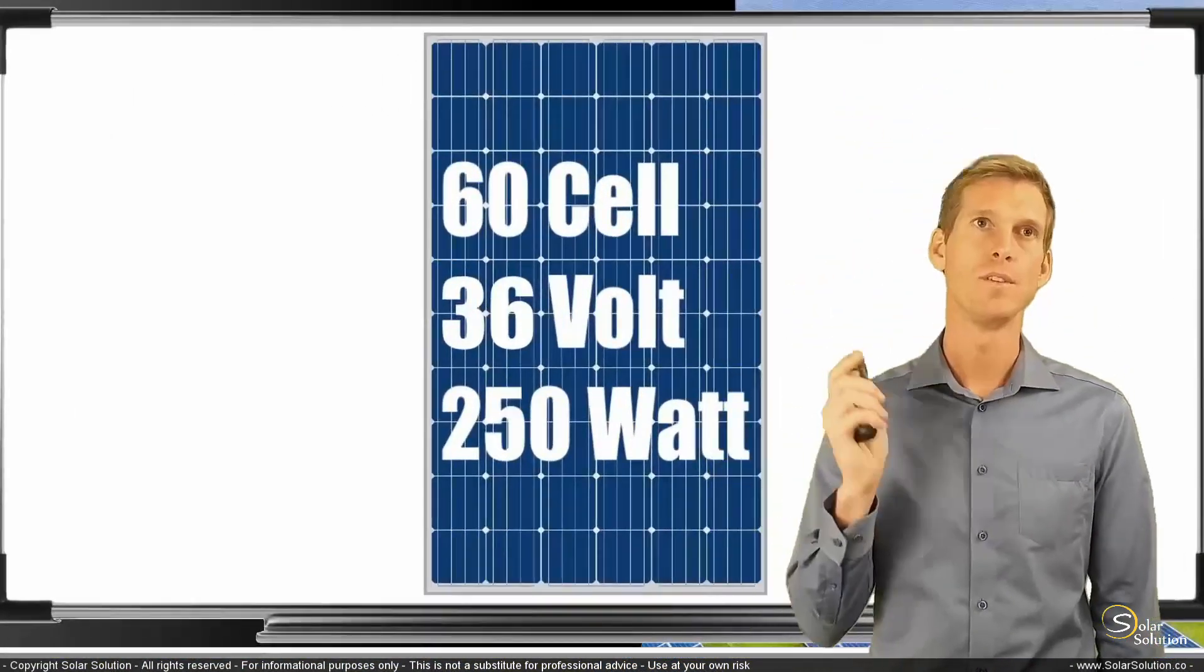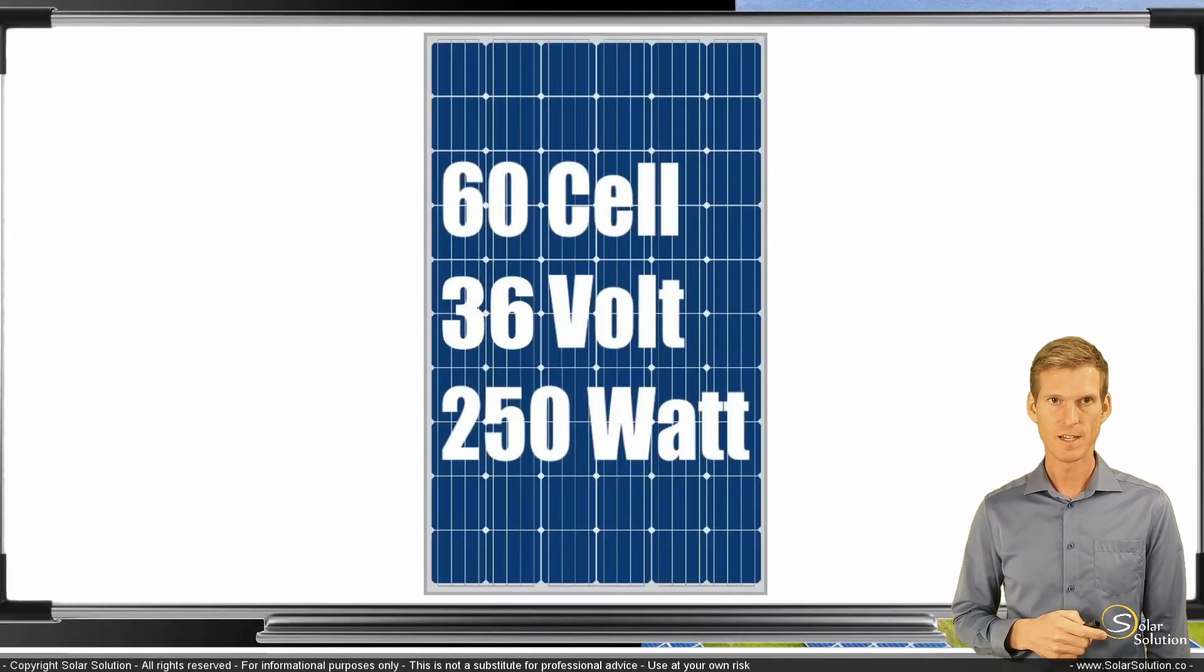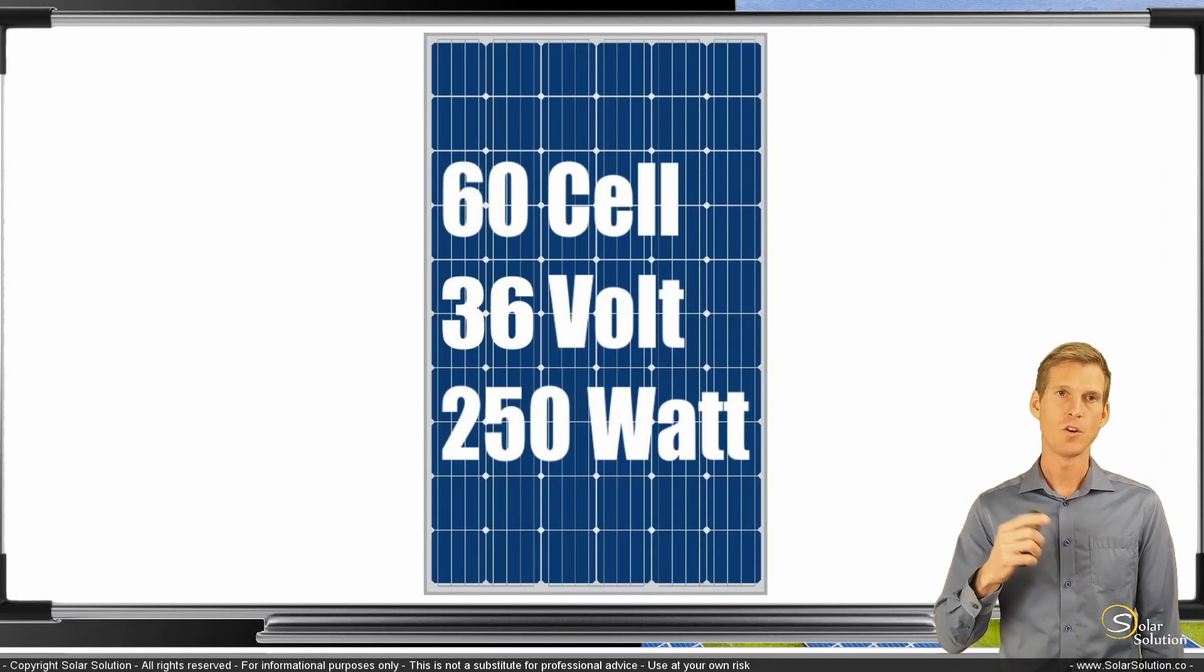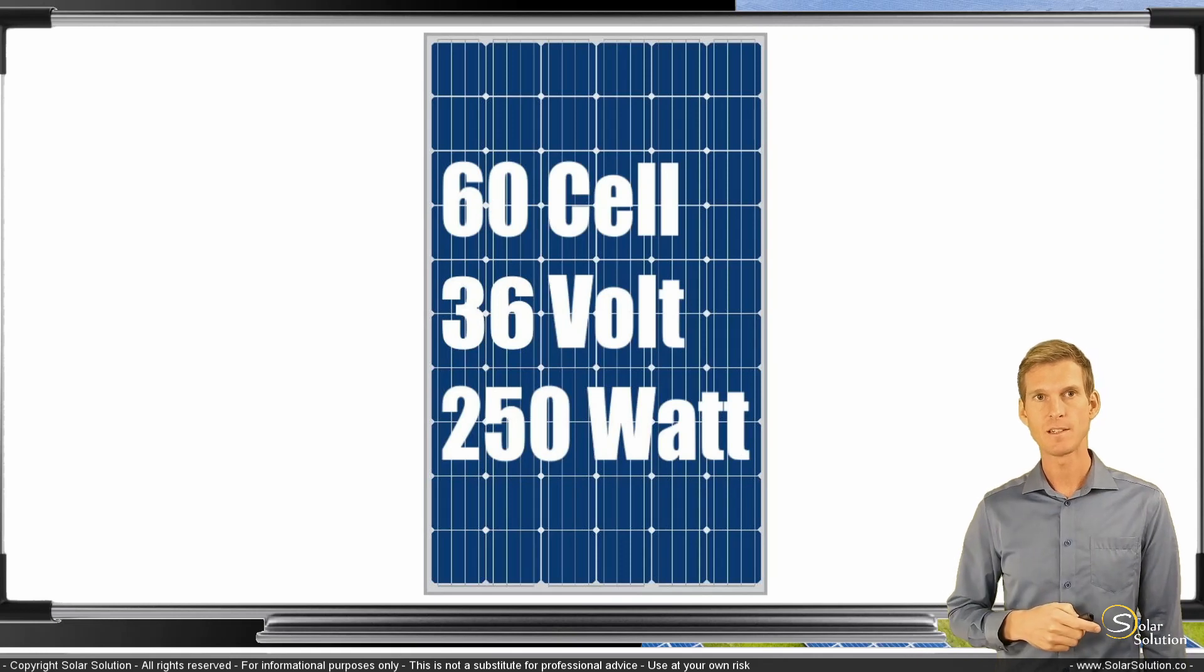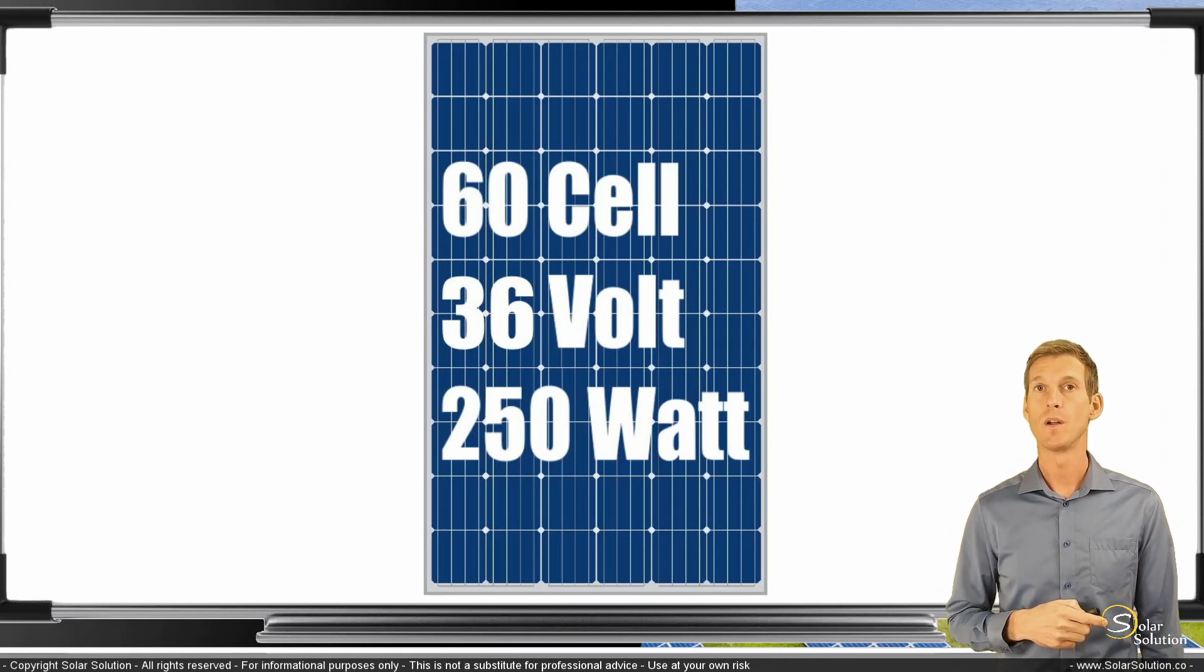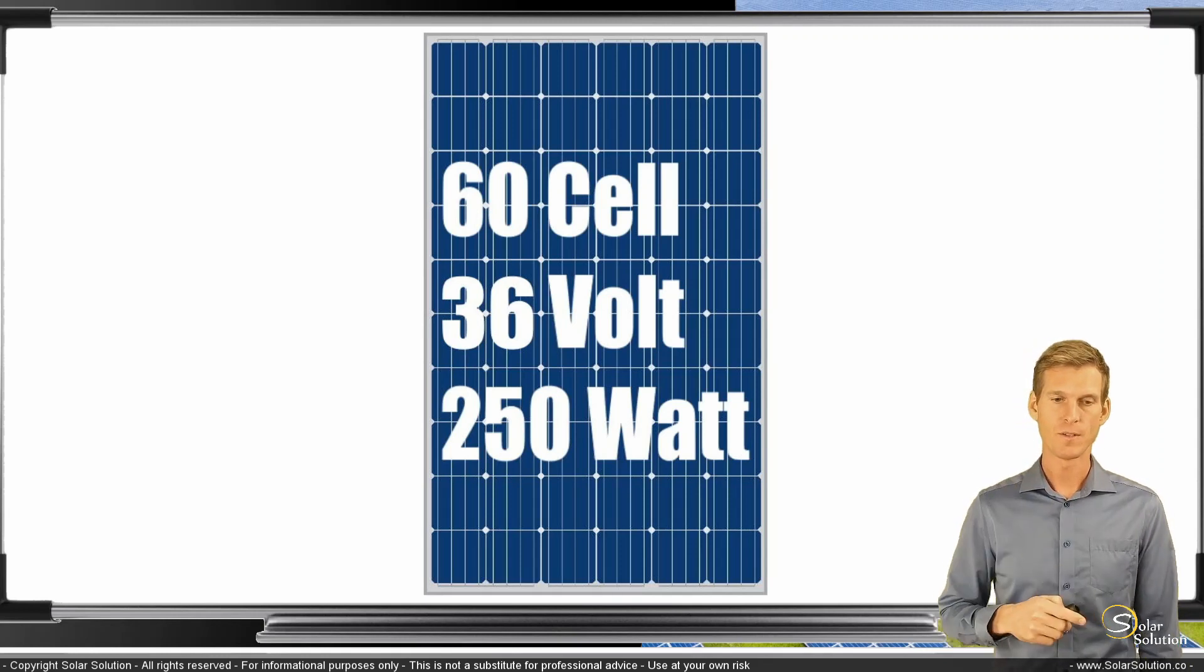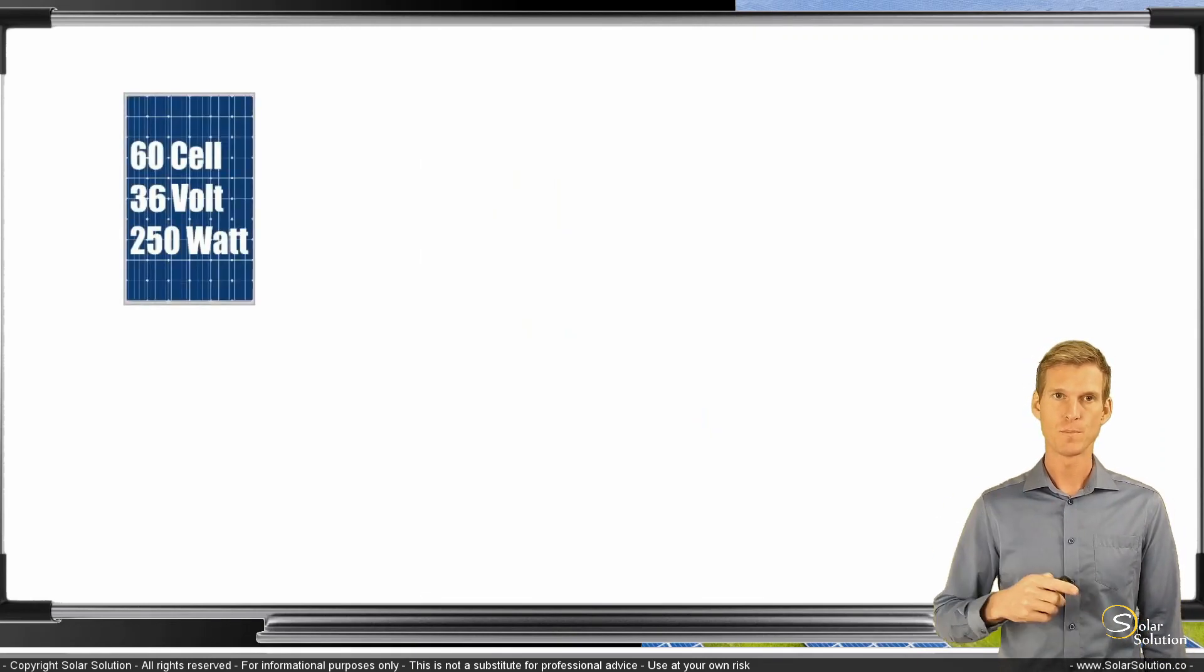So we start out with the same module that we just built. It is a 60 cell photovoltaic module, a theoretical photovoltaic module that has an open circuit voltage of 36 volts. And just for the sake of this exercise, we take a rated power output of 250 watts on the standard test conditions. So we have one of these panels and we want to connect an additional five panels together with this first panel.